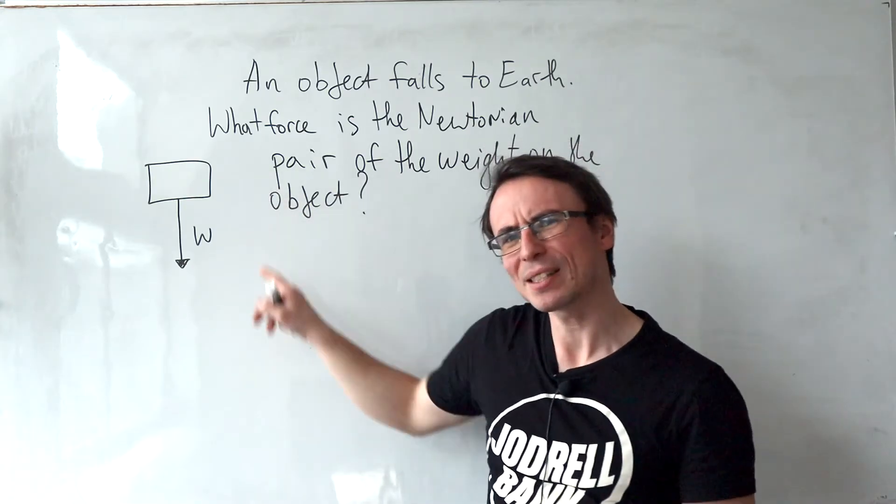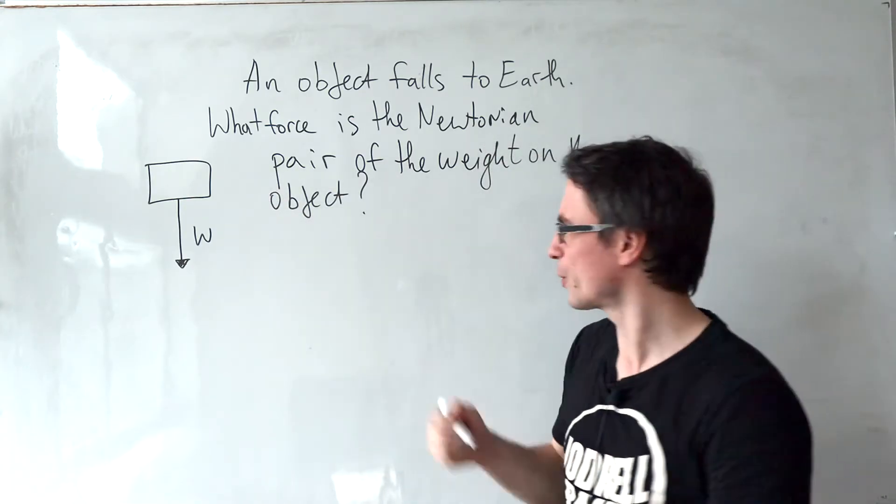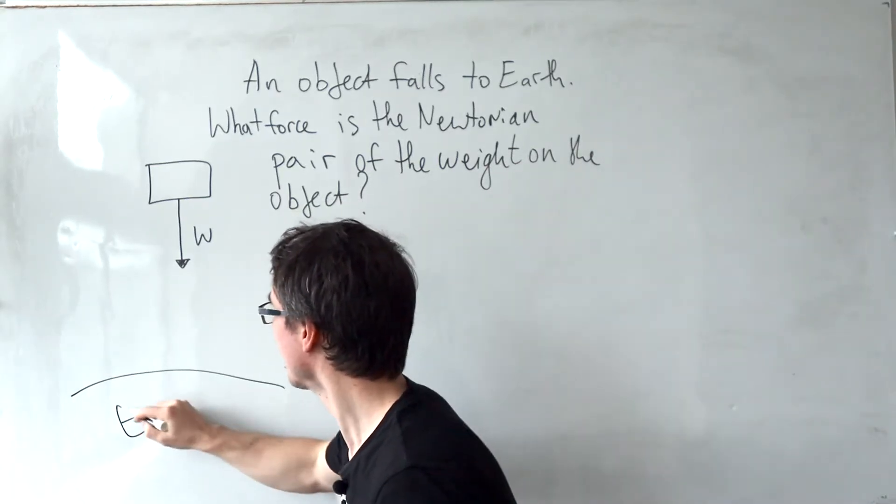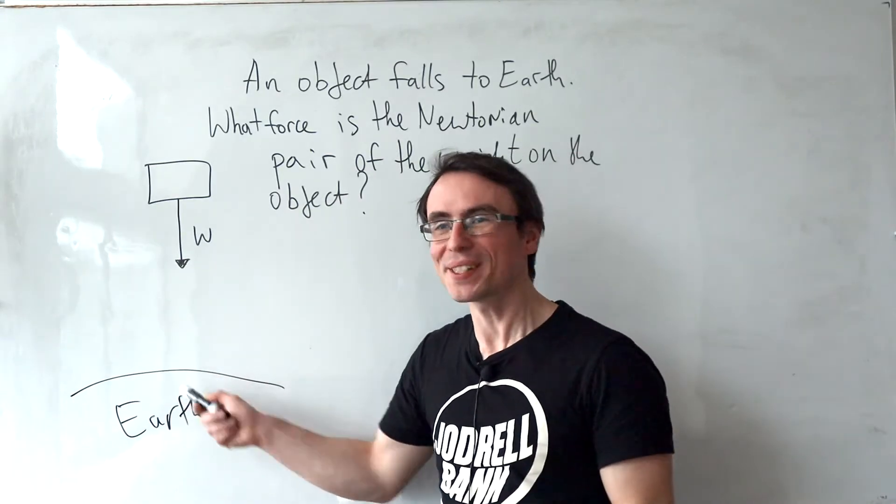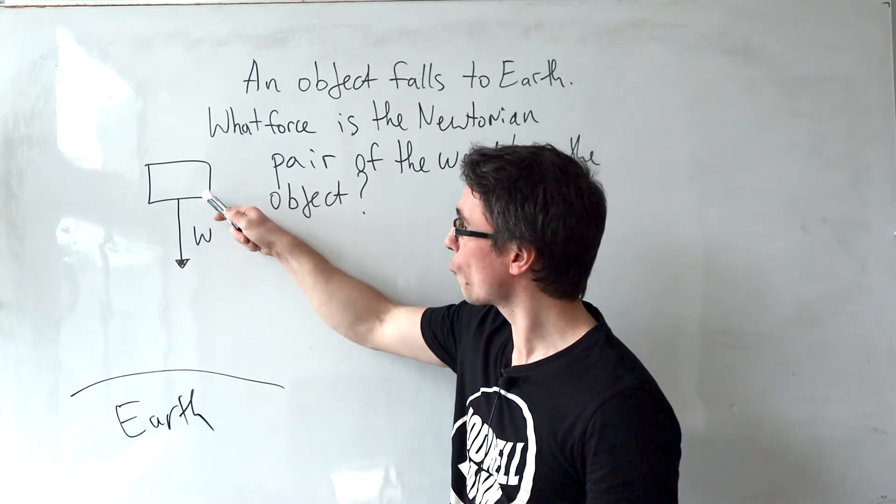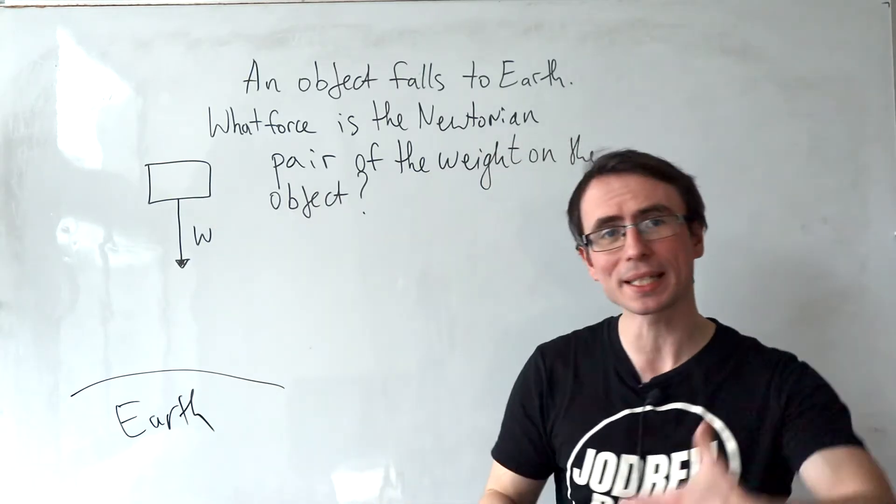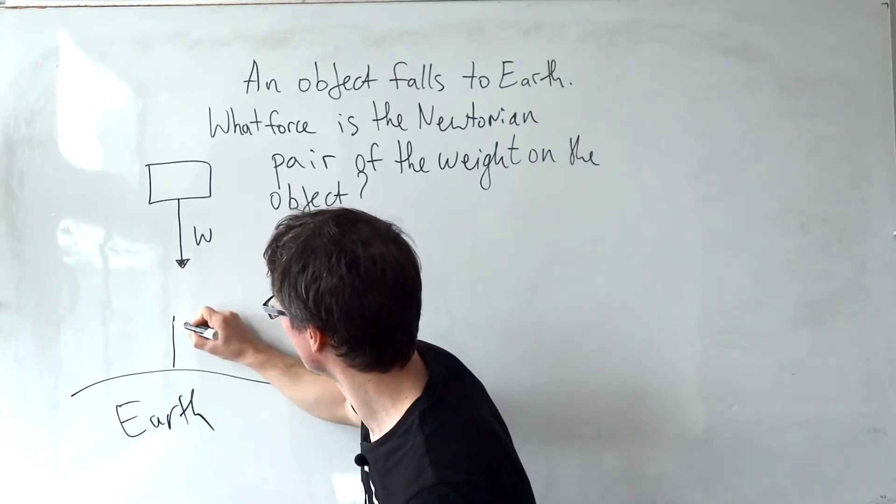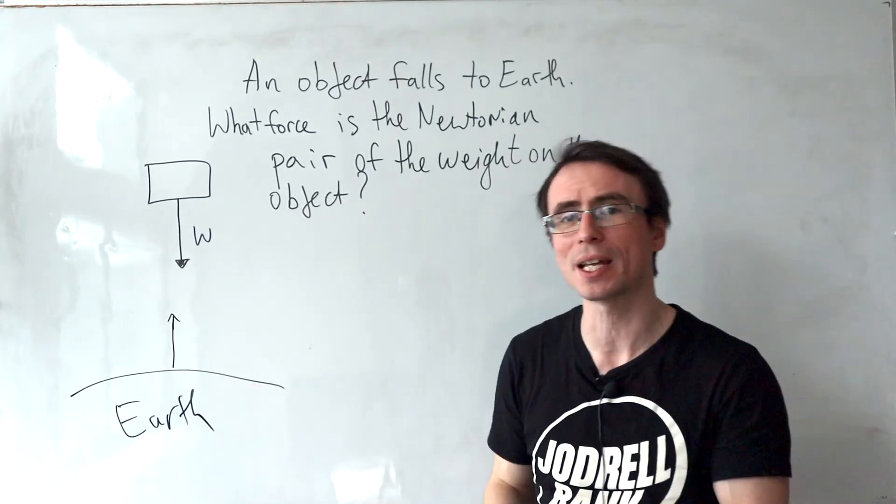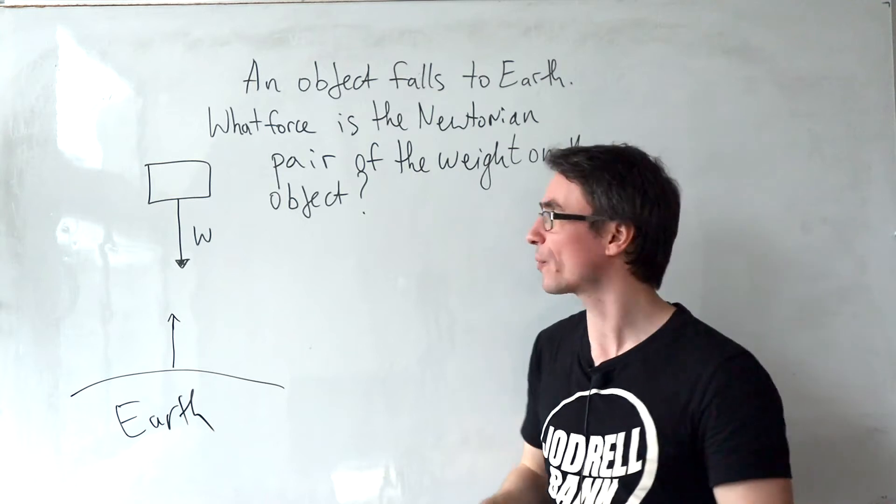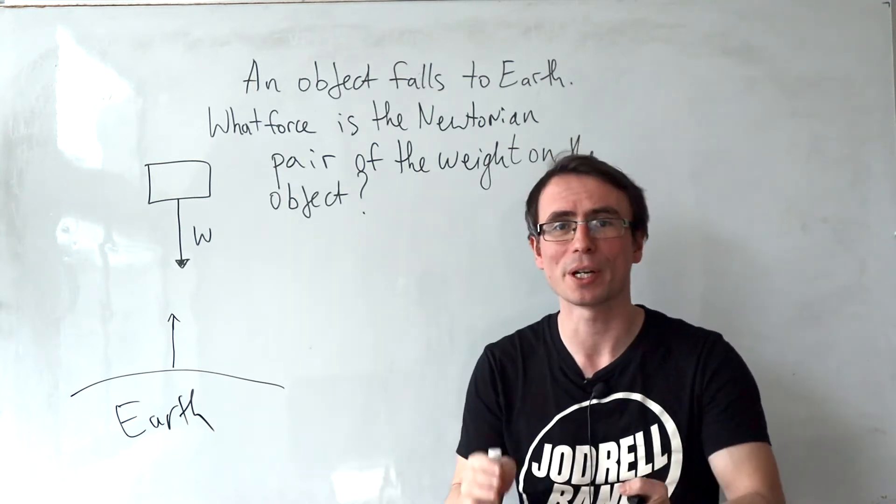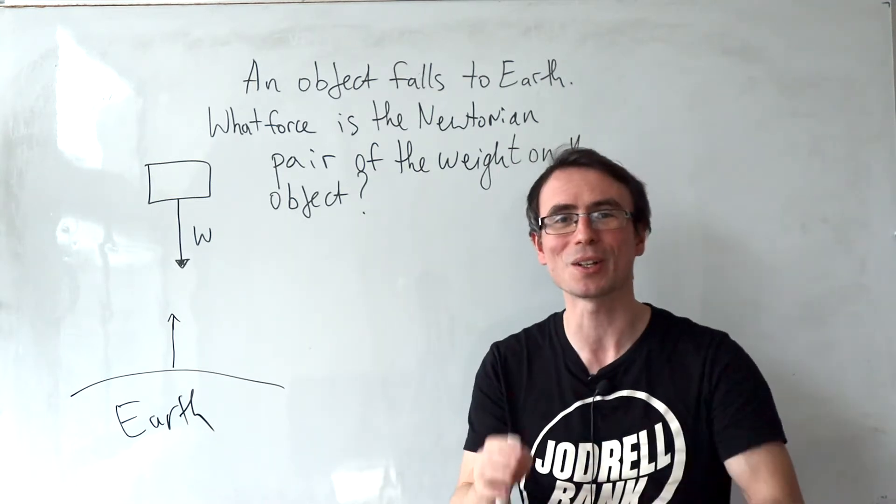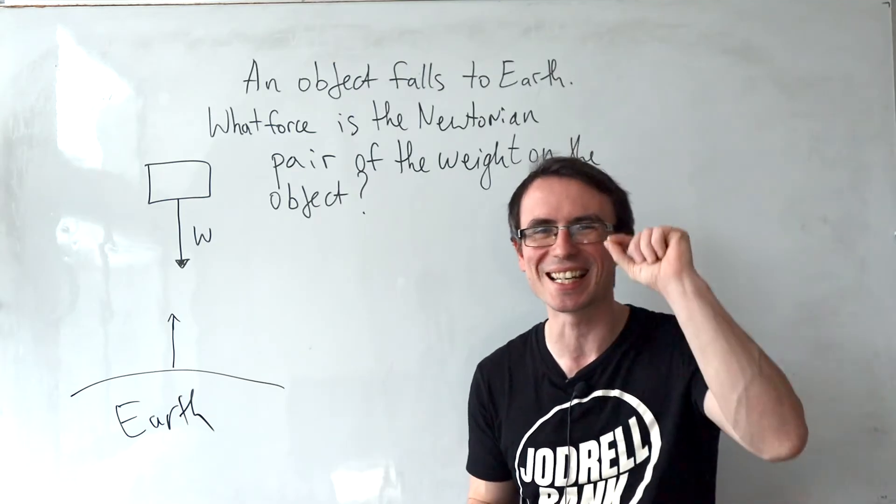Now, what is actually pulling this object downwards? The answer is, of course, well, the earth. If the earth is exhibiting a gravitational force onto the object, that means that the object is exhibiting a gravitational force, which is equal and opposite on the earth. The only difference is that this thing can weigh not very much, but the earth weighs quite a lot, so the resulting acceleration is minuscule.